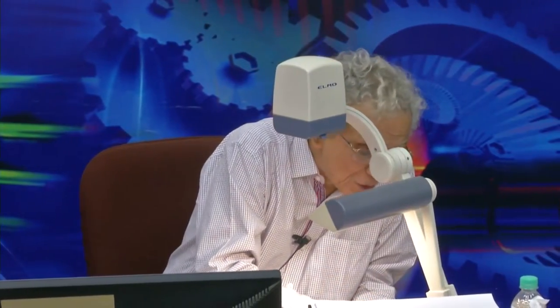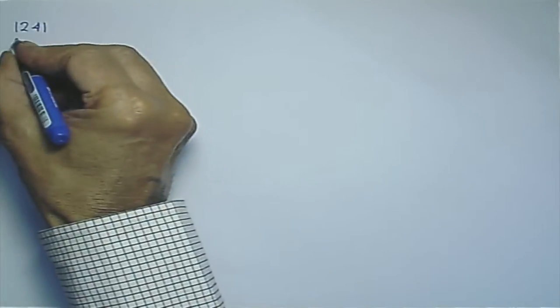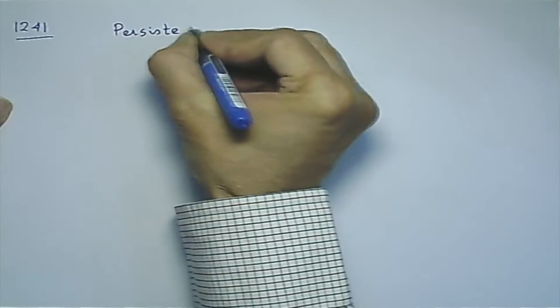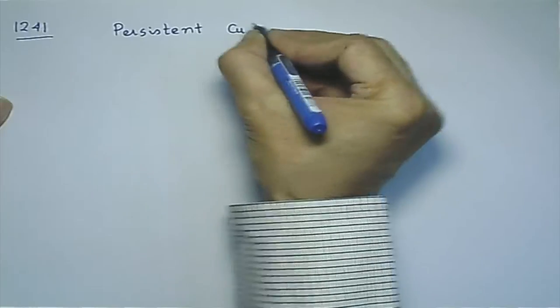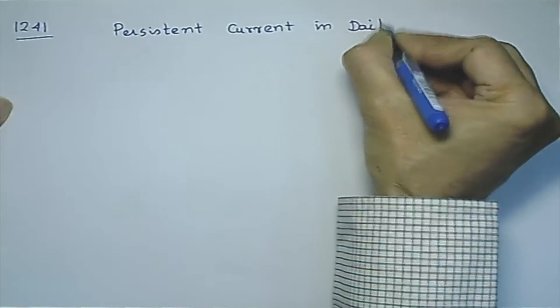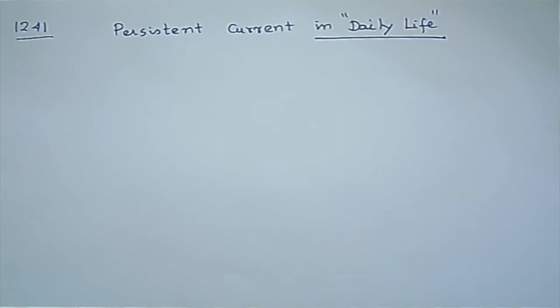The first question comes from NRI Institute of Information Science and Technology at Bhopal: what is the use of persistent current in daily life? I cannot talk about daily life because superconductivity does not appear in daily life. But basically the question is, what good is persistent current? Can you use it for anything? This is something which one can actually answer.